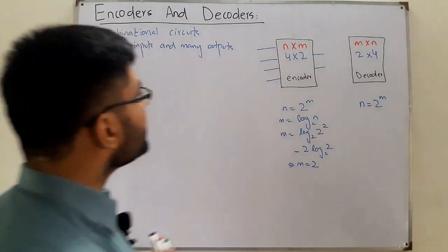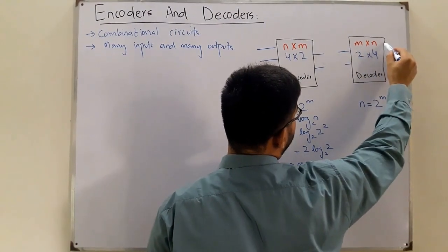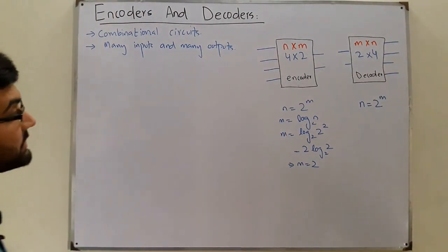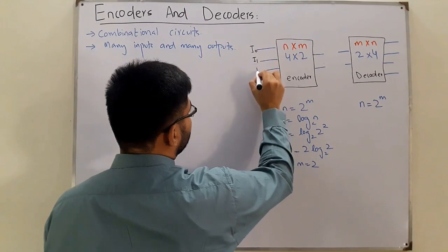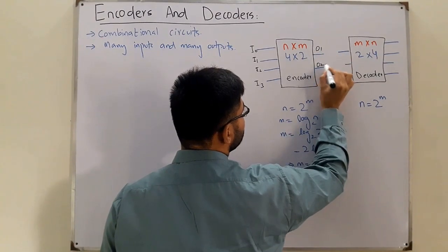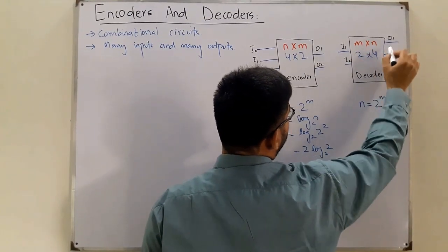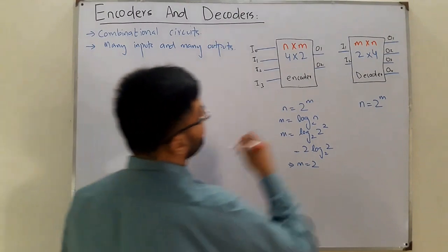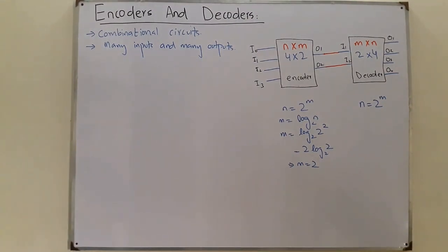On the encoder side we have two input lines and four output lines. Let's name the encoder inputs i0, i1, i2, i3, and the encoder outputs o1 and o2. These outputs then act as inputs to the decoder — i1 and i2 — and the decoder produces outputs o1, o2, o3, o4. The output of the encoder is connected to the input of the decoder.